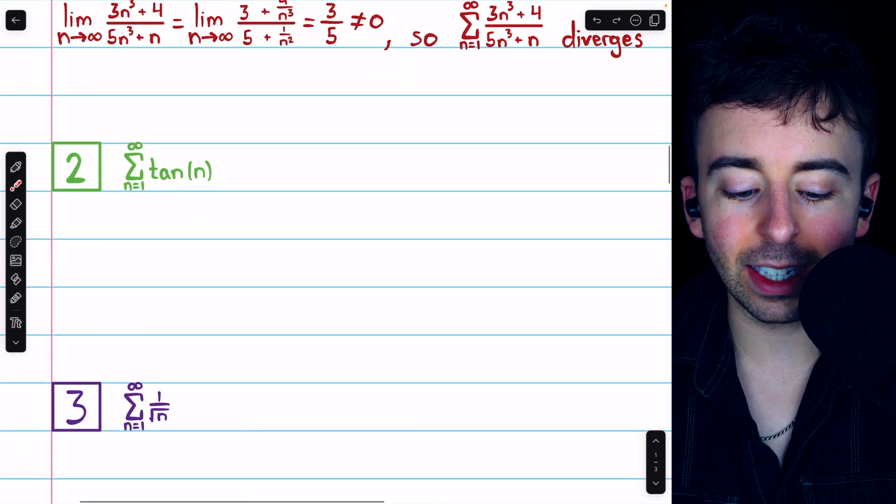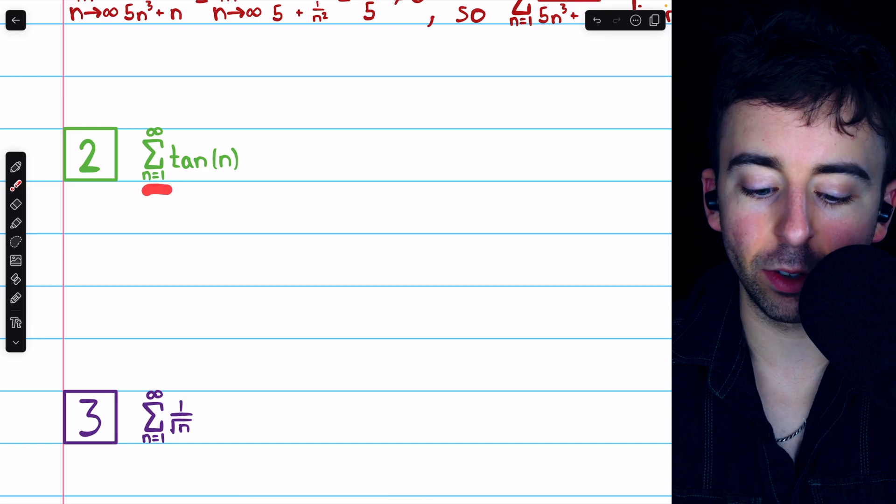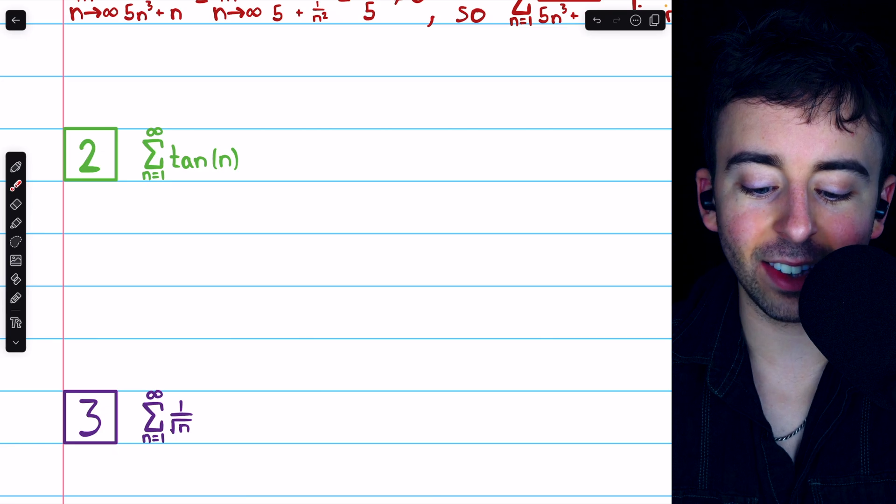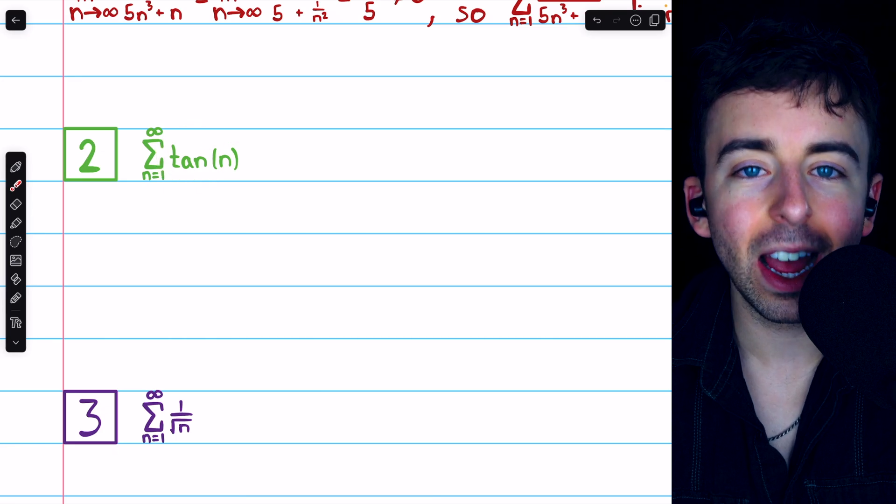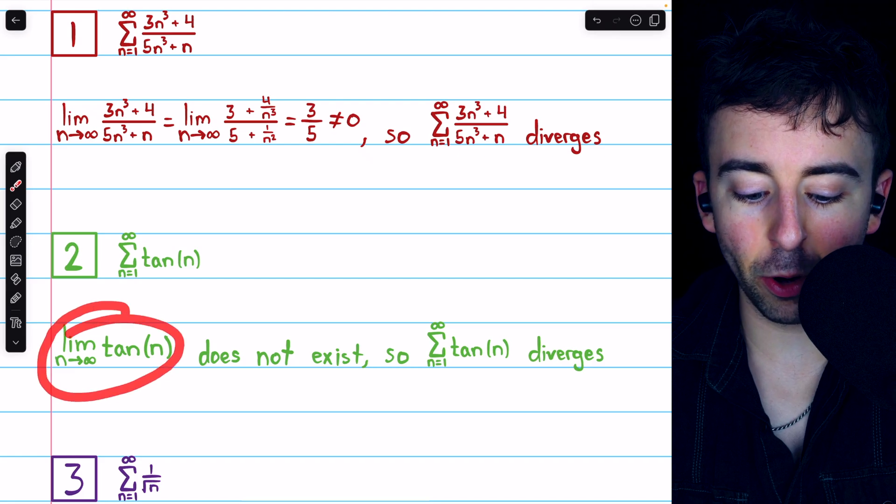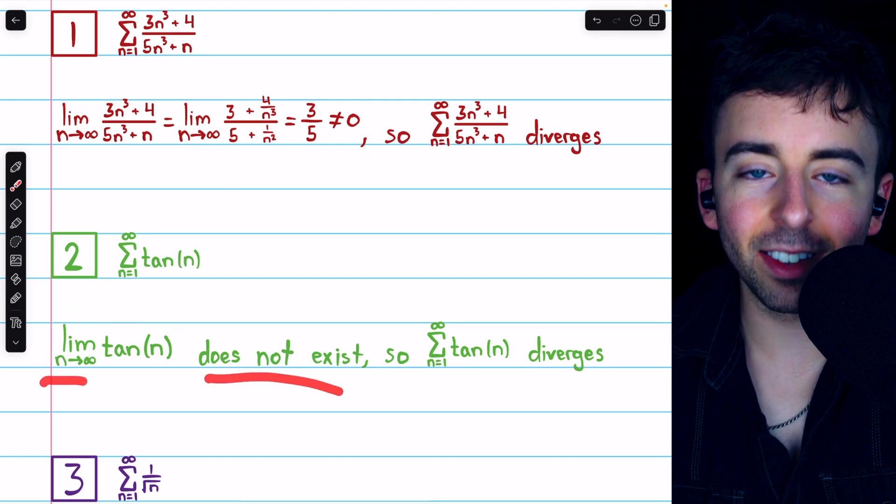Here, we're looking at the series adding tangent of n, where n ranges from 1 to infinity. So let's ask, what does tangent of n approach as n goes to infinity? The answer, of course, is that it doesn't approach anything. The limit of tangent of n as n goes to infinity doesn't exist.